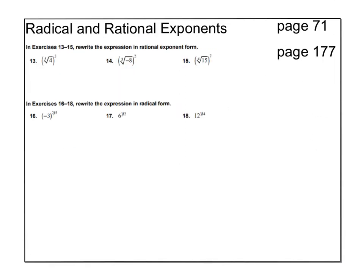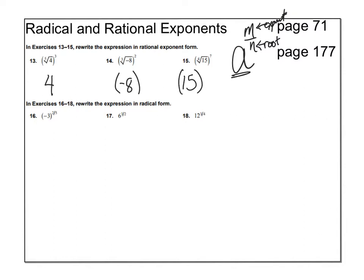Next page. Write the expression in rational exponent form — that means write it with your root on the bottom and your exponent on the top, with your base. For number 13, my base is 4. For number 14, my base is negative 8. Number 15, my base is 15. I'm going to have a fraction exponent. The root goes in the denominator: fourth root, fourth root. 3 goes in the numerator as the exponent, then exponent 2, and exponent 7. Those are my answers for 13, 14, and 15.